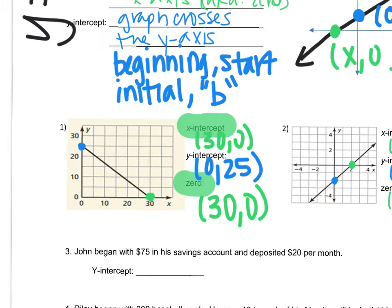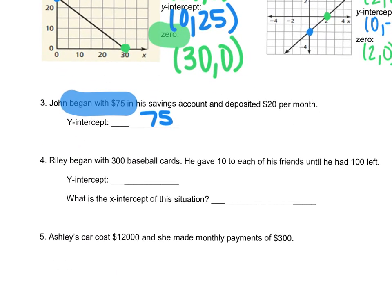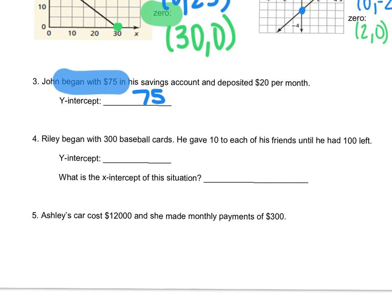Recall that in a word problem, we could say our y-intercept is our beginning or starting value, our initial value. So on problem 3, John began with $75, so our y-intercept is going to be 75 because that was the beginning value. Number 4, Riley began with 300 baseball cards, so our y-intercept is 300.